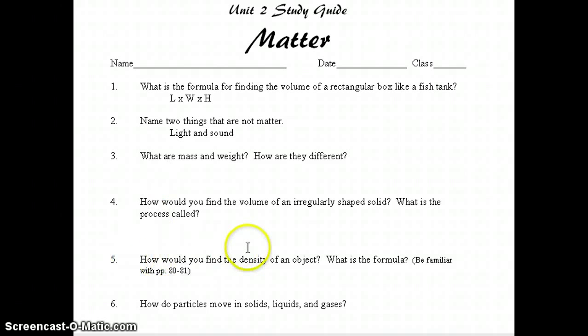Number 5, how would you find the density of an object? What is the formula? It says make sure you're familiar with pages 80 and 81. The correct answer, density equals mass divided by volume. That is the formula, and you would find the object's mass, find the object's volume, and then divide mass by volume. Number 6, how do particles move in solids, liquids, and gases?